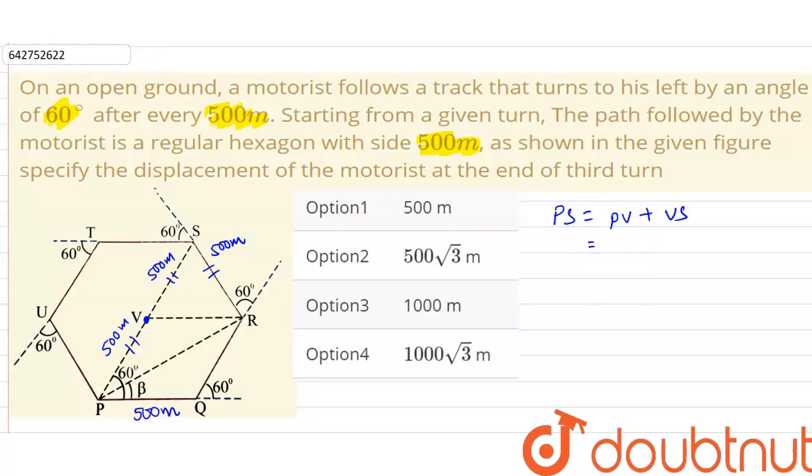500 meters plus 500 meters. The total displacement of the motorist will be 1000 meters.